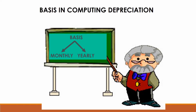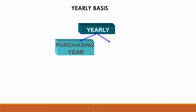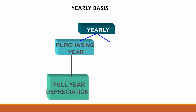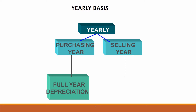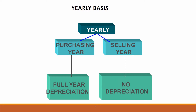When computing depreciation there are two bases: monthly or yearly. For the yearly basis, in the purchasing year we must calculate a full year of depreciation, and for the selling year there is no depreciation recorded in the year of disposal.